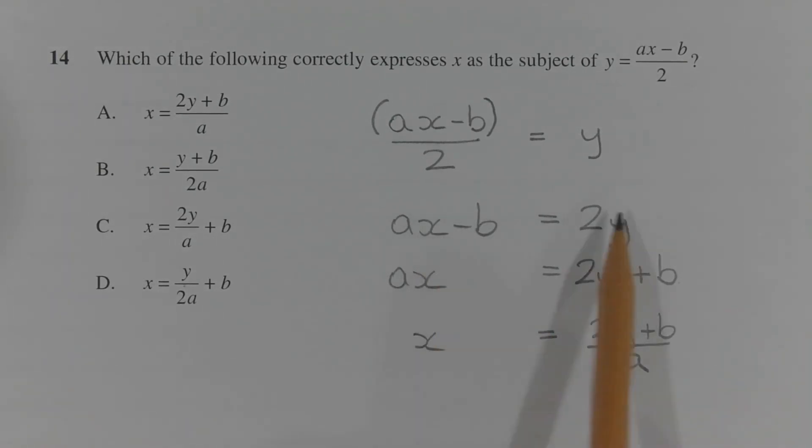Next, I'm going to add b to both sides of the equation. So we have ax is equal to 2y plus b.